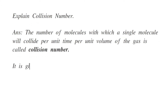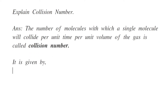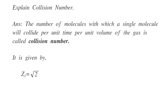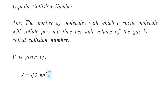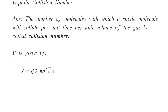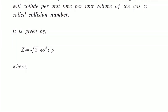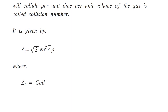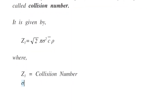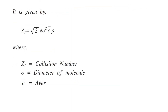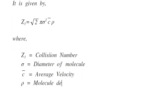It is given by equation z1 is equal to square root of 2 pi sigma square c rho, where z1 is the collision number for one molecule, sigma is the diameter of the molecule, c is the average velocity, and rho is the molecular density of the gas, that is the number of molecules per unit volume.